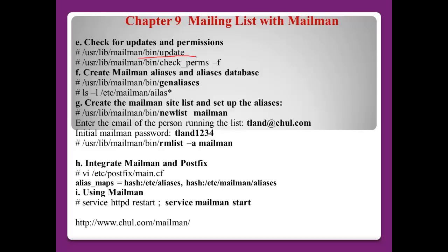Check for updates and permissions: after installation you can use the update command to check if updates are needed, and also check permissions using the check_perms command — this will verify the exact permissions for each directory and file. For Mailman aliases and the database: Mailman uses aliases, so find '/etc/mailman/aliases'. Using the 'genaliases' command will create two files — 'aliases' and 'aliases.db'. Once you complete the general options configuration, you can start creating mailing lists.